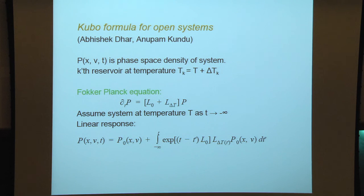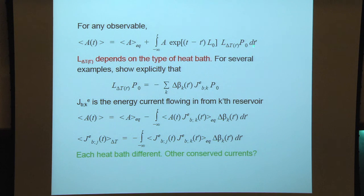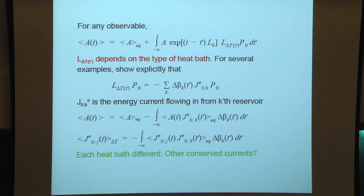For any observable A, you find that the value of the observable at time t — long after you switched on this reservoir — is equal to the equilibrium value plus this integral. The whole work comes in rewriting this expression in terms of the appropriate current acting on the equilibrium Fokker-Planck density. This has to be done explicitly case by case. This integral from minus infinity to t doesn't diverge when t goes to infinity depending on the properties of the operator; it just says this integral equals the response function.